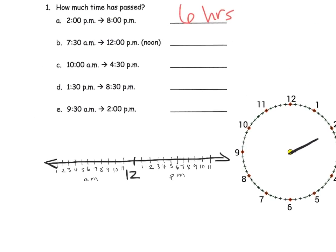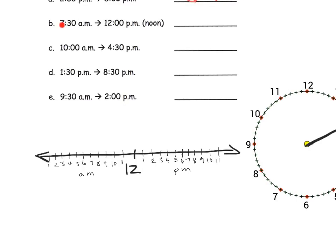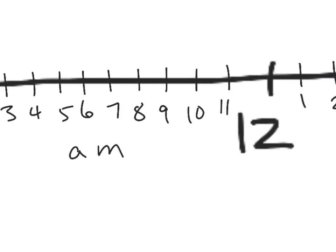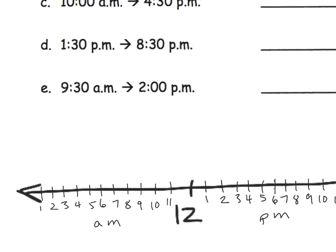Using that same idea, how about from 7:30 a.m. to 12 noon? So we're going to start at 7:30 a.m. and go to noon. We're going to count: there are 1, 2, 3, 4 full hours, and then a half hour right here. So we could say a half hour plus an hour plus an hour plus an hour plus an hour. To go from 7:30 all the way to noon, it's 4 and a half hours.